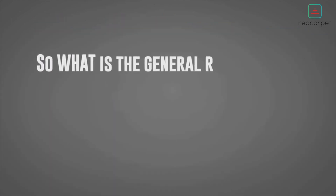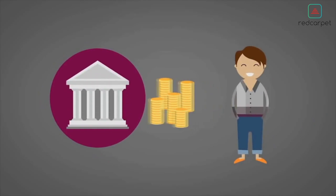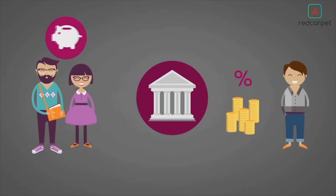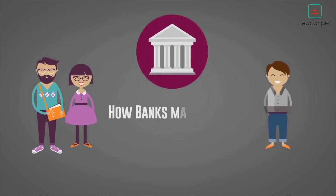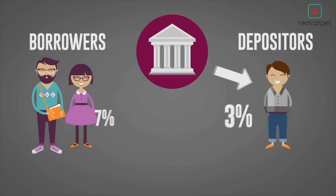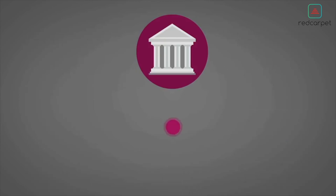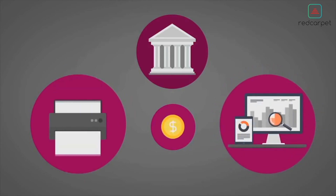What is the general role of a bank? Depositors — people with a money surplus — place their money at the bank to earn a return through credit interest. Borrowers — people with a shortage of money — are willing to pay interest on money the bank lends them. A bank's primary source of revenue comes from the difference between the interest it pays to depositors and the interest it earns from borrowers. Banks also make profit by charging fees or commissions for services and from investments.